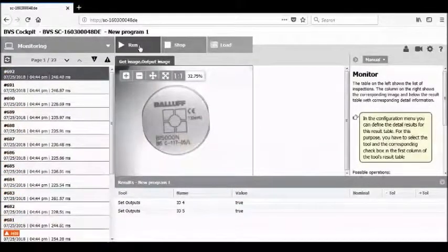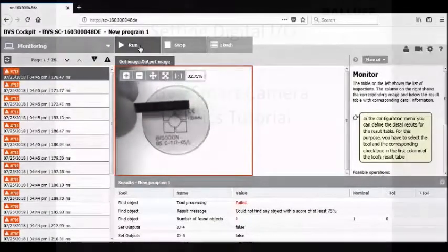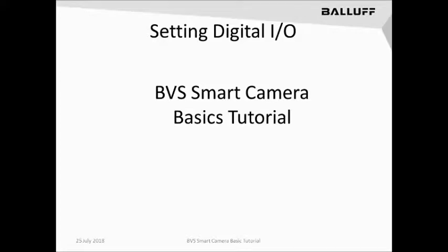I'll go ahead and block the part and you can see how IO4 and IO5 will change states based on the logic we programmed. The check object tool is failing, and therefore we're losing both tools because of the logic we programmed into them. Remember, when blocking what the finder is using, you will lose the part altogether. So in this lesson, to review: to set digital IO to show results from the camera or bring inputs in from an outside source, we configure digital IO in the system settings, then insert the get inputs and set output tools, and use a combination of logic, tool results, and digital inputs to trigger digital outputs.